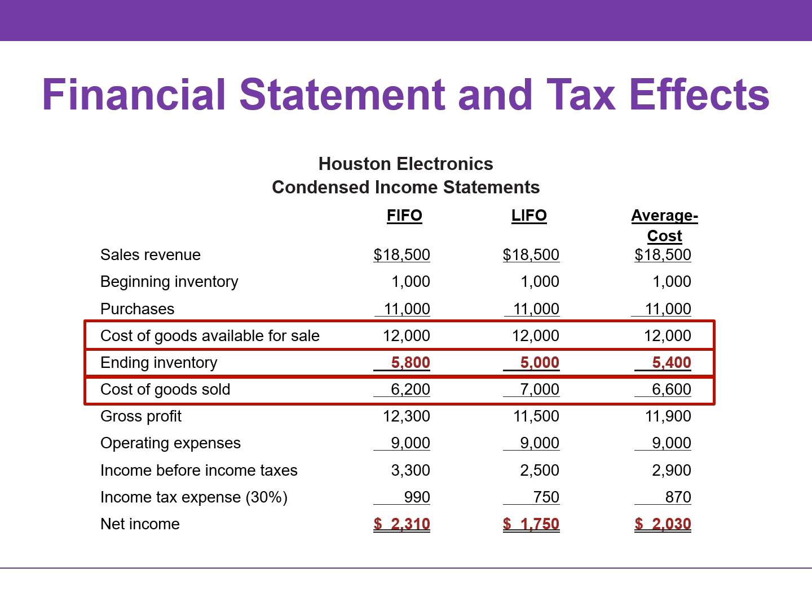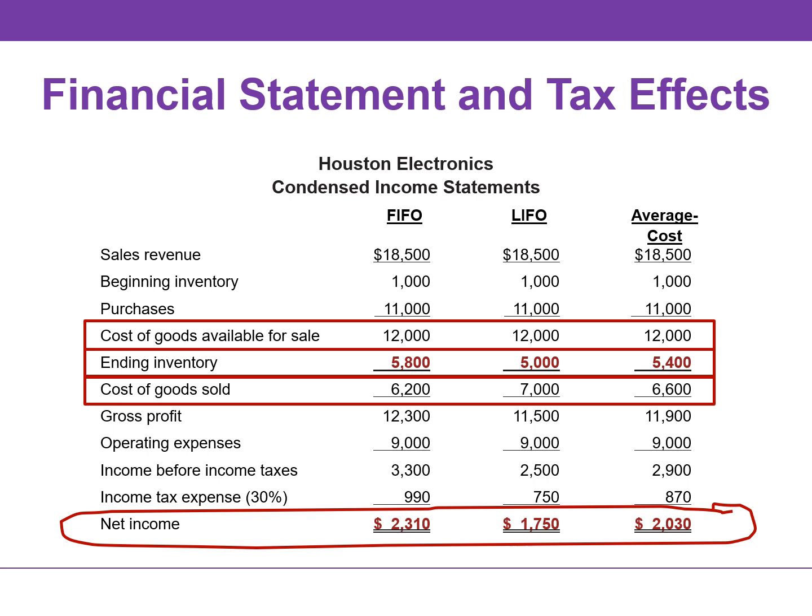In periods of rising prices or inflation, the cost flow assumption can have a significant impact on income. In periods of rising prices, FIFO will report the highest net income — in this example, $2,310. LIFO will report the lowest income — in this example, $1,750. And average cost will fall in the middle at $2,030.